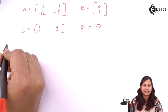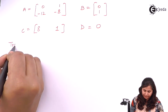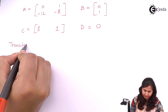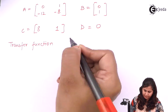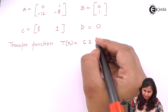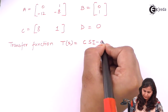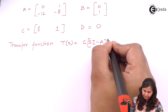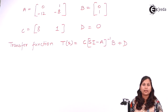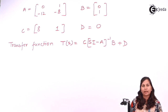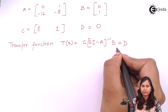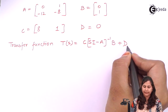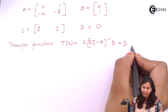Now we know that the transfer function is given by the formula: C(sI - A)^(-1)B + D. We have the values of C, A, B, and D, so we can put in the values.